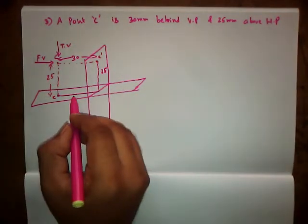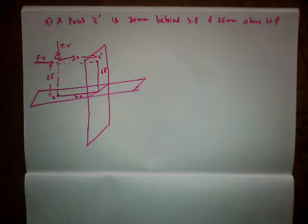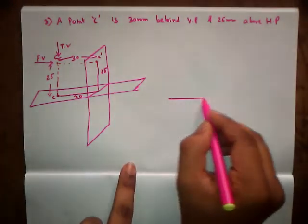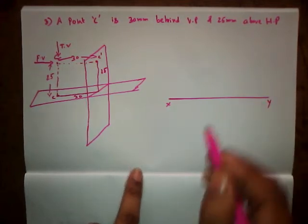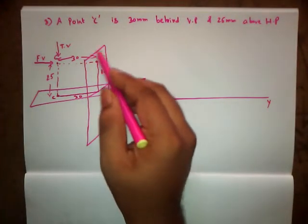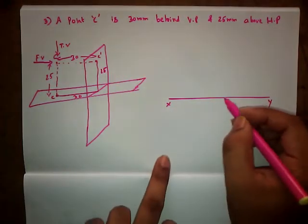And the opposite distance is going to be 30 mm. Right, so let us draw a horizontal line XY reference line. Okay, so on the vertical plane we have C dash, which is the point at a distance of 25 mm from XY reference line.